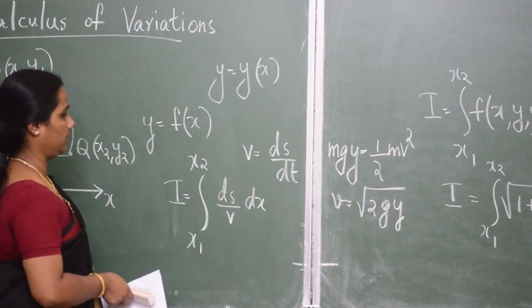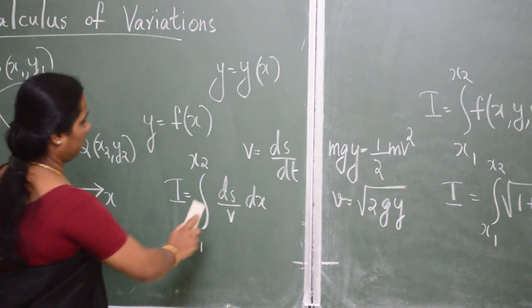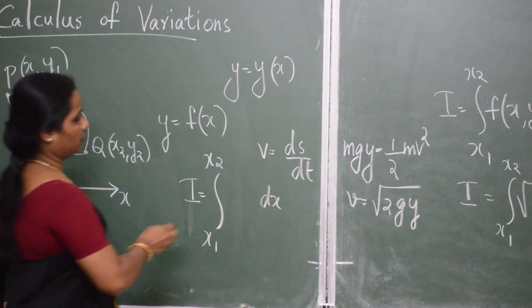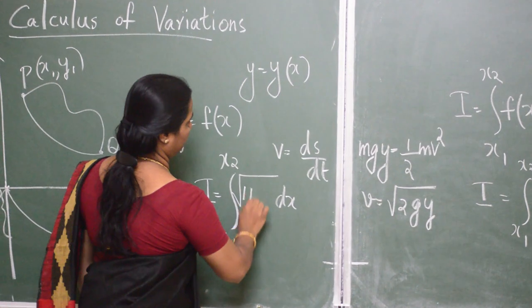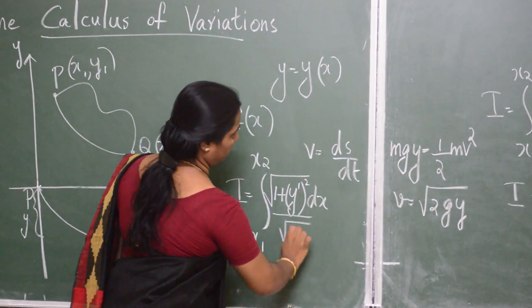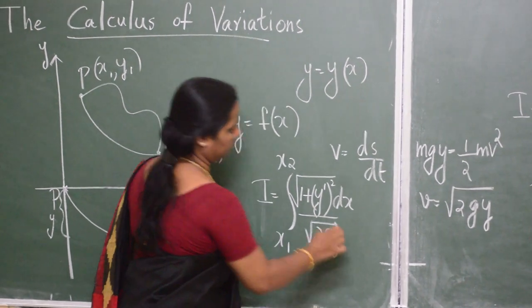So, here we have to minimize the integral x1 to x2 root of 1 plus y dash square dx divided by root of 2gy.